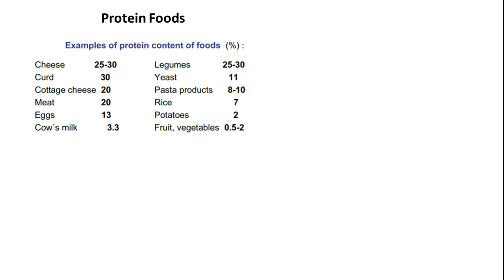In this session we will discuss digestion and absorption. Let us discuss foods enriched with proteins and specific requirements for a protein-rich food to be considered a good resource for amino acids. Examples of protein-containing foods include cheese, curd, cottage cheese, meat, eggs, etc. Note that these percentages are in the wet condition — at least 80% of meat is actually water, which is why only 13% of egg contains protein by weight.